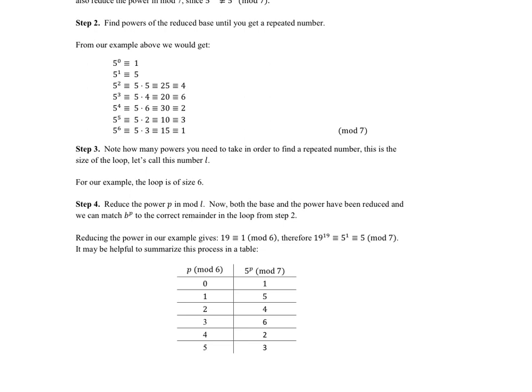So in this particular problem, we had 19 to the power of 19. Originally 19 was reduced in mod 7 to get 5. Now the 19 in the power gets reduced in mod 6, and we get 1 as that result. So the numbers in our loop correspond to having 5 to the power of 1. 5 to the power of 1 is 5, so that would be our answer.